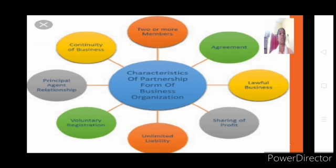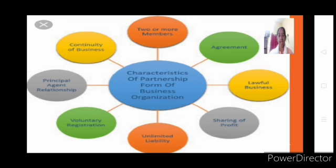Even if it is not registered, an agreement is very important between the partners. This agreement is called a partnership deed — a written agreement between the partners. In this deed they record the investment each partner is making, the percentage of profit each will share, the percentage of loss each will bear, and their respective rights and responsibilities. Everything is mentioned in that agreement, duly signed and stamped by all partners. For sole proprietorship there are no legal formalities, but to start a partnership firm an agreement is required.